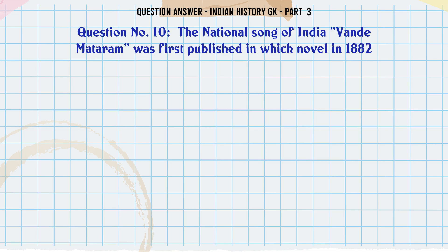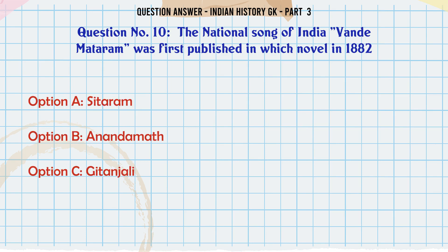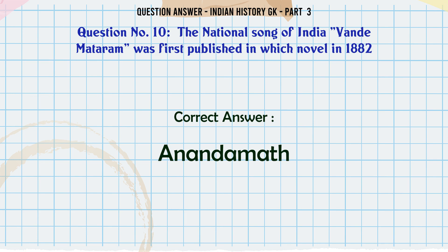The National Song of India, Vande Mataram, was first published in which novel in 1882? A. Charitram, B. Anandamath, C. Gitanjali, D. None of the above. The correct answer is Anandamath.